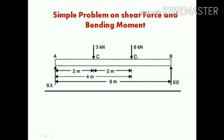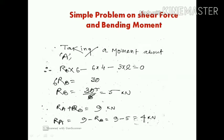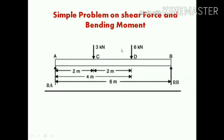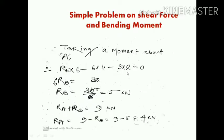The 6 kilo newton load acts 4 meters from A, so its moment is 6 into 4. The sign is negative due to sign conventions, as the load acts downward. The 3 kilo newton load at point C acts 2 meters from A, giving a moment of 3 into 2. Setting the total moment equal to zero, we can find Rb.